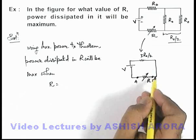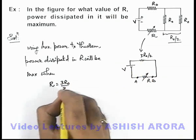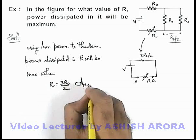Across the resistance, so that is given as 3R_not by 2, so it should be 3R_not by 2, and that'll be the answer to this problem.